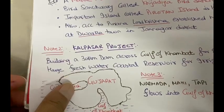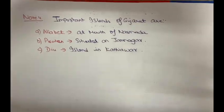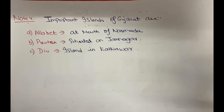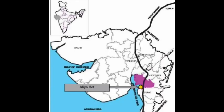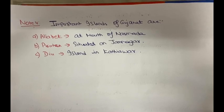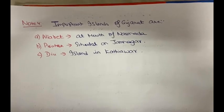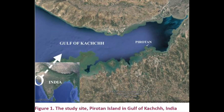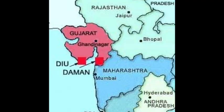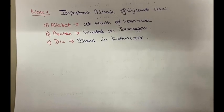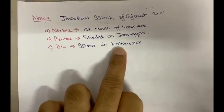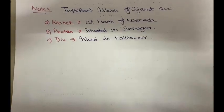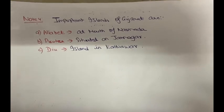You should also note the important islands of Gujarat. In Saurashtra there are many islands. Near where Narmada drains out, there is Pirotan Island in Jamnagar (near the Marine National Park). Also, the Diu part of Daman and Diu — Diu is an island and it also belongs to Gujarat. So Diu Island is in Kathiawar. These are all very important islands you should know.